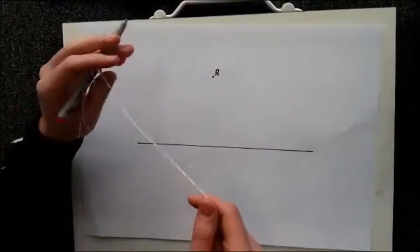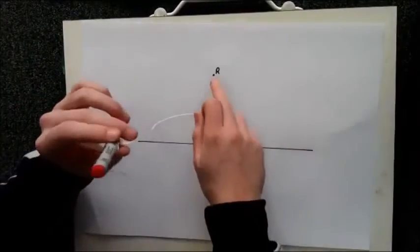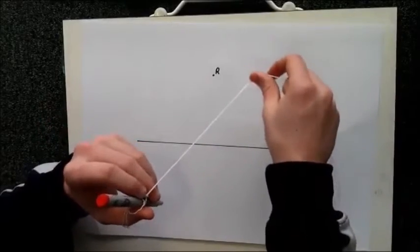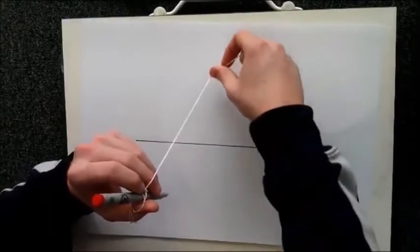To drop a perpendicular from an external point onto a given line, I will place my compass on a point above the given line and make two arcs across the line, creating two points.